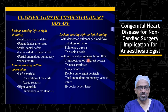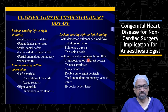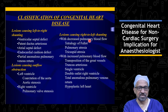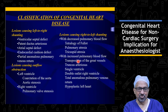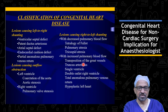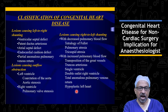In the cyanotic group we have two categories. The first category has decreased pulmonary blood flow — for example, tetralogy of Fallot, pulmonary atresia, and tricuspid atresia. The second category has increased pulmonary blood flow — for example, transposition of great arteries, total anomalous pulmonary venous connection, truncus arteriosus, single ventricle, double outlet right ventricle, and hypoplastic left heart.